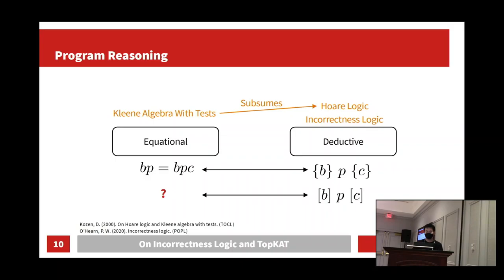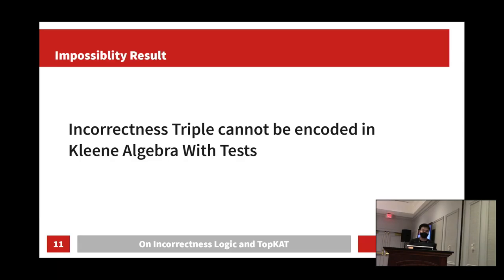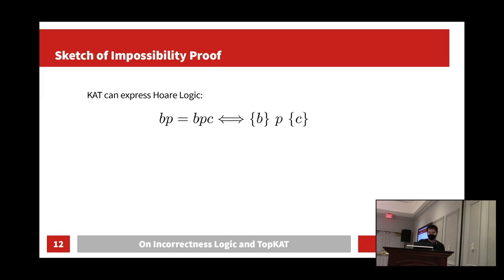Because incorrectness logic is very similar to Hoare logic, it is natural to ask whether we can encode incorrectness logic in Kleene algebra with tests. A similar discussion has already appeared in Peter O'Hearn's original incorrectness logic paper. However, we have shown that incorrectness triples cannot be encoded in Kleene algebra with tests. In order to express incorrectness logic in KAT, we would need two terms T and T prime such that their equivalence is exactly equivalent to the validity of the incorrectness triple BPC.